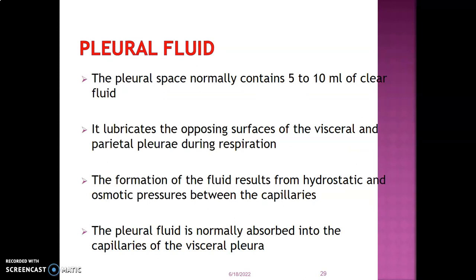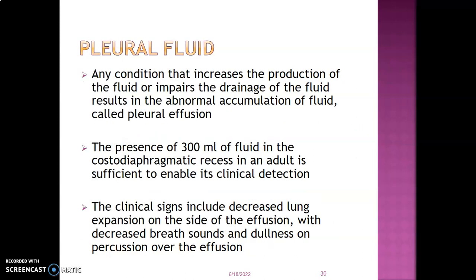Pleural fluid is five to ten milliliters of fluid within the pleural space between the parietal and visceral layers. It lubricates the opposing surfaces so that during respiration there is minimal friction. The formation of fluid results from hydrostatic and osmotic pressure between the capillaries and the pleural fluid; normally it is absorbed into the capillaries of the visceral pleura. If there is an increase in fluid production, it can impair drainage, leading to accumulation of pleural fluid.